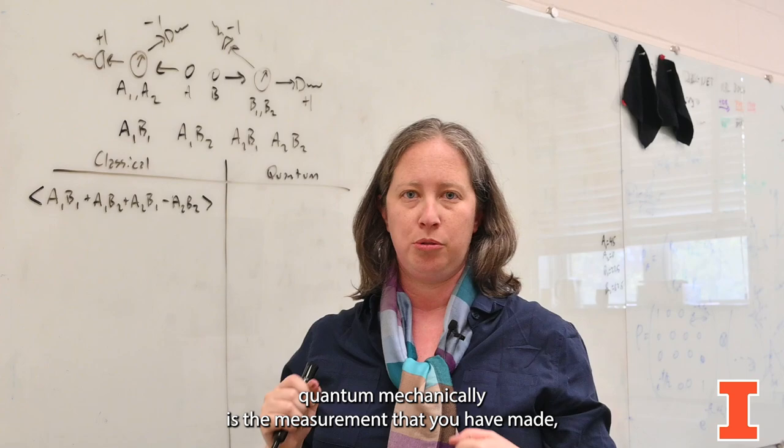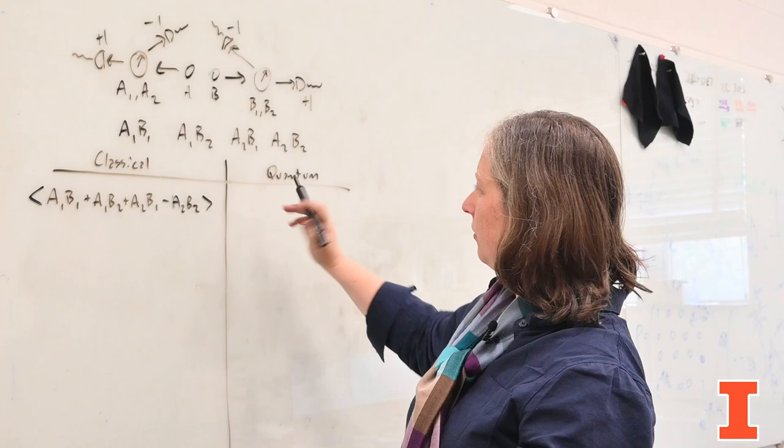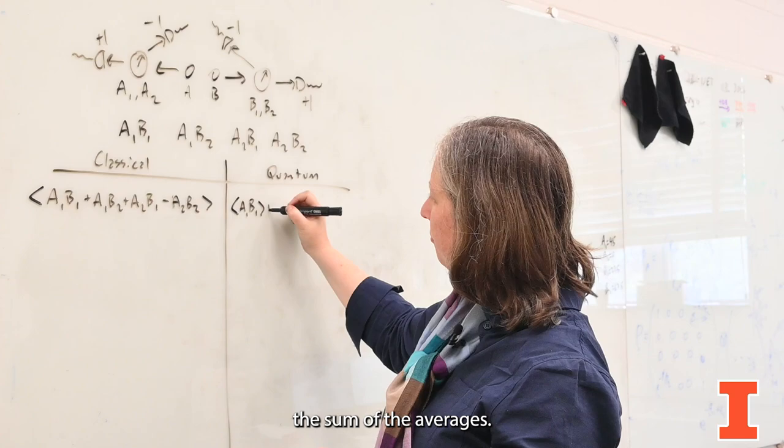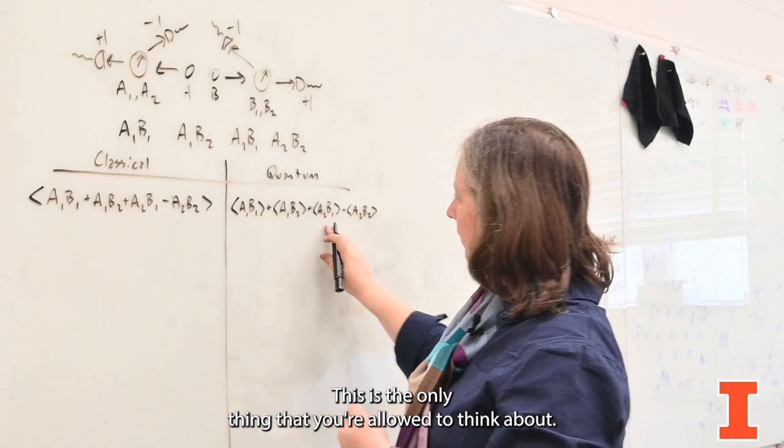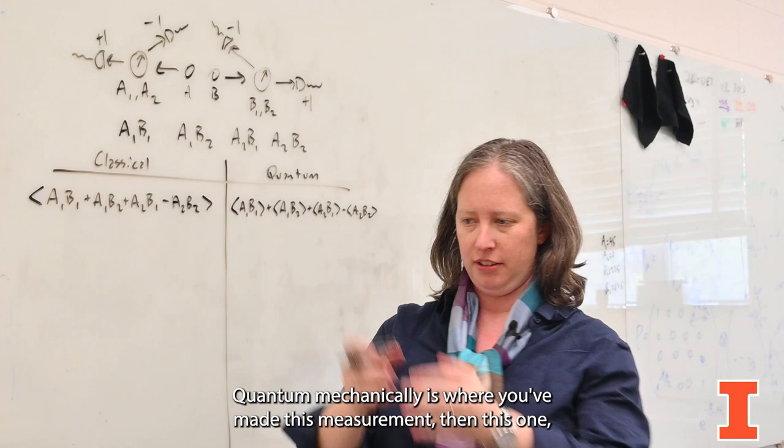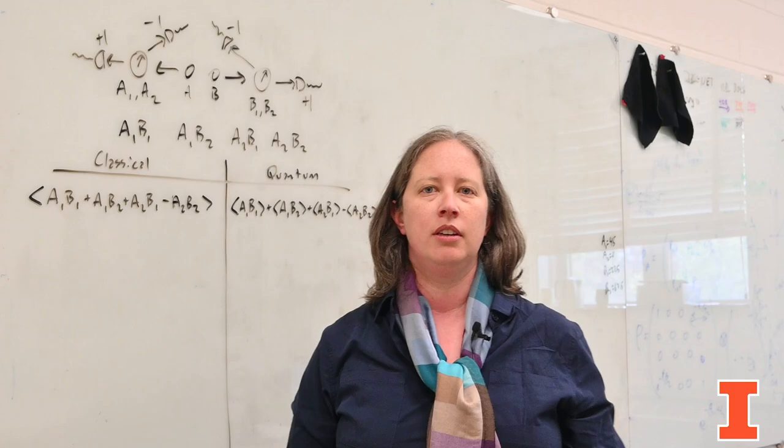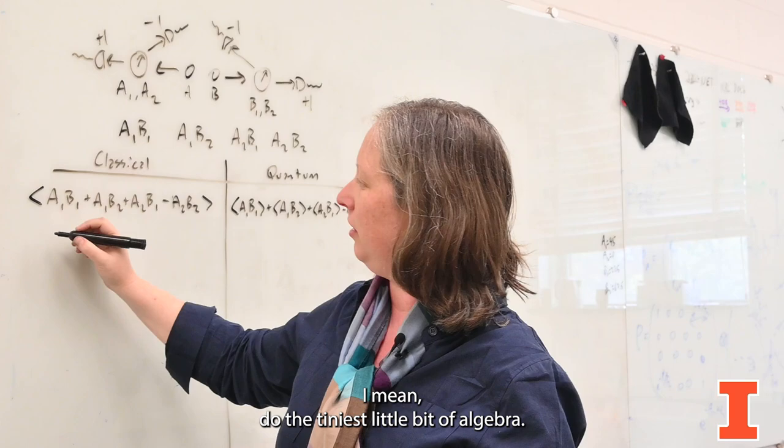Now on the quantum side, quantum mechanics says no, you're definitely not allowed to do that. The only thing that you have quantum mechanically is the measurement that you have made. Which means for quantum mechanics, the thing that you have is in fact the sum of the averages in this way. This is the only thing that you're allowed to think about quantum mechanically, is where you've made this measurement, then this one, then this one, then this one, and you take the sum, but where you subtract off the last one.